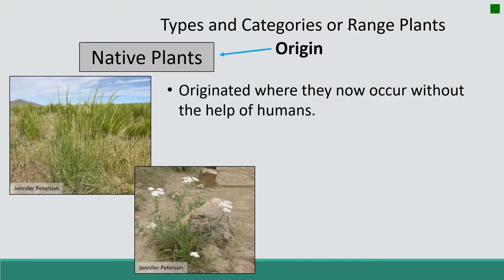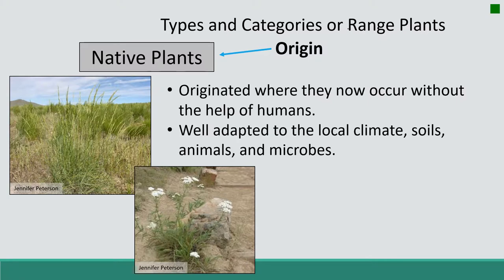An organism's home is also determined by a host of influences. Native plants are well adapted to local climate patterns, soils, animals, and microbes.